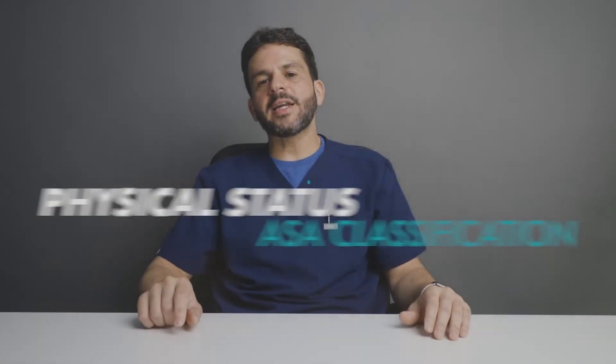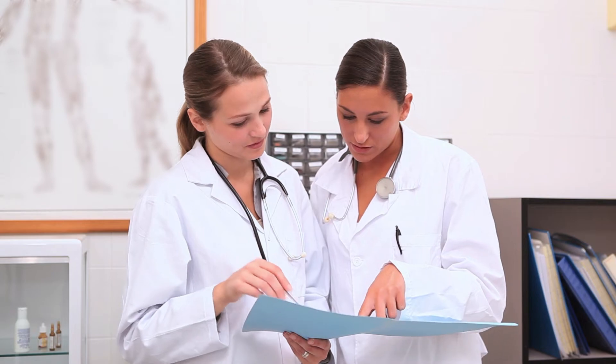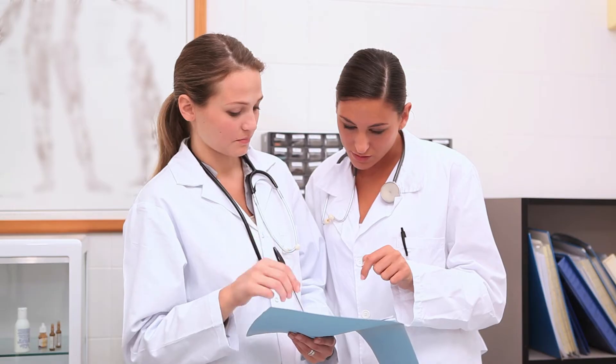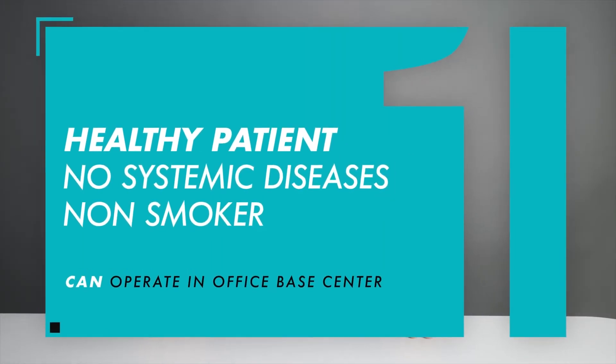A physical status or ASA classification is a classification that determines the risk of a patient, established by the American Society of Anesthesiologists. There's ASA 1 through ASA 6. An ASA 1 patient is a healthy patient who has no systemic diseases and is a non-smoker.